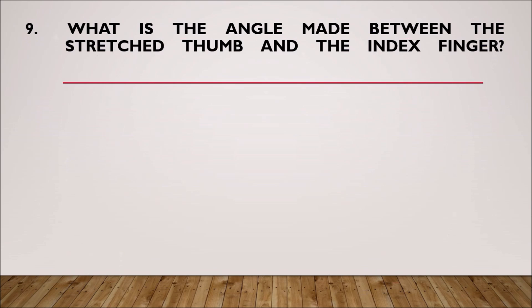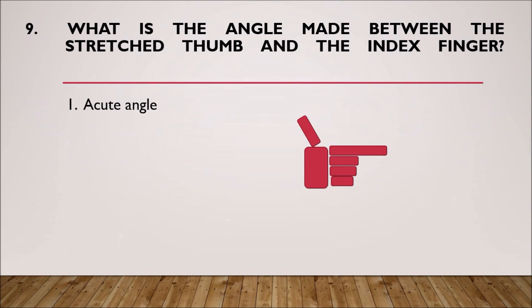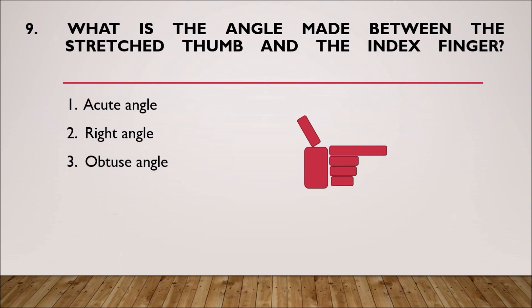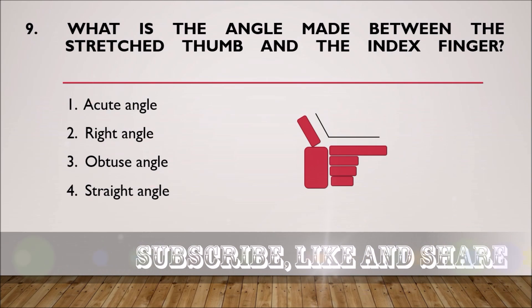Question number 9: What is the angle made between a stretched thumb and index finger? Here we have the stretched thumb and index finger. Options: acute angle, right angle, obtuse angle, straight angle. The angle formed is an obtuse angle, so the third option is the correct answer.